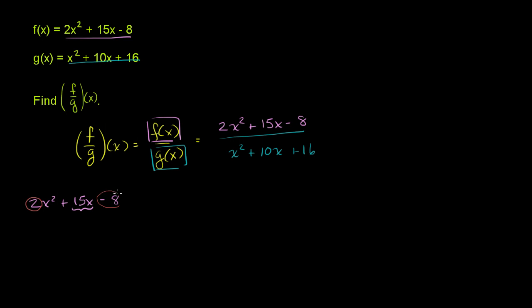We want to find two numbers that add up to 15 but whose product equals negative 16. Since the product is negative, the numbers must have different signs — one positive and one negative — which means one is larger than 15 and one is smaller. The obvious choice is positive 16 and negative 1: multiplied they give negative 16, and added they give 15.